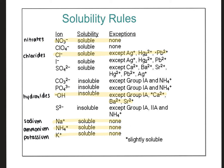These are the solubility rules — ions are listed, and the highlighted ones are the ones to make flashcards for and memorize. For example, NO₃⁻ (nitrate) is always soluble with no exceptions — so NaNO₃ and Pb(NO₃)₂ are both soluble. Chlorides are always soluble except when paired with silver, mercury(II), or lead(II) — so those are insoluble exceptions. So NaCl dissolves, but AgCl does not.